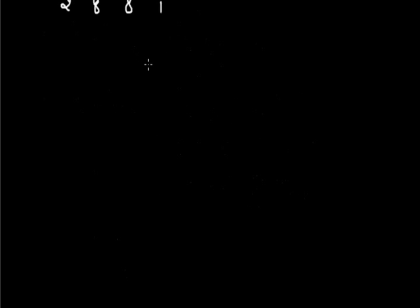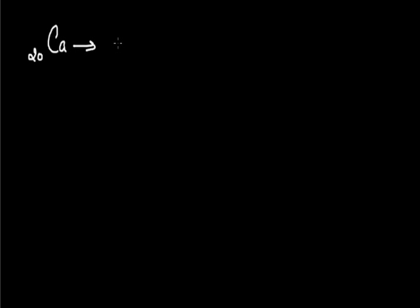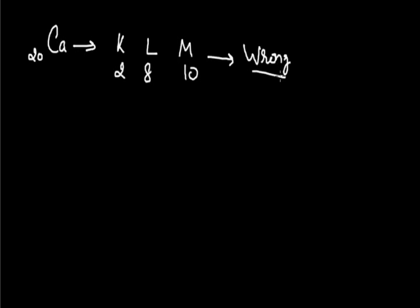Moving to atomic number 20, which is calcium, the initial rules would suggest the configuration K2, L8, M10. But according to the octet rule, this is wrong. The correct configuration stops M shell at 8 electrons, and the remaining 2 electrons move to N shell. So the correct configuration for calcium is K2, L8, M8, N2.